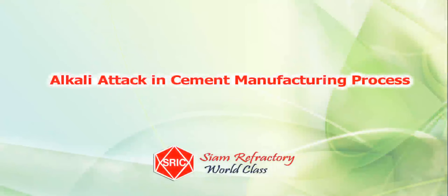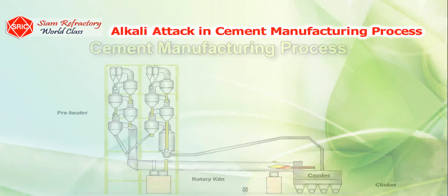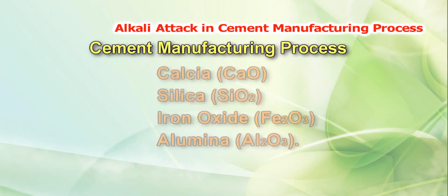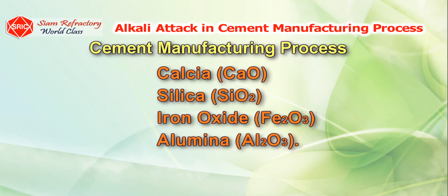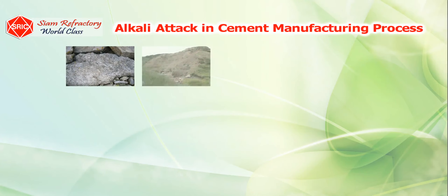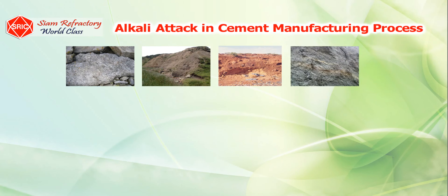In the alkali attack in a cement manufacturing process, the fundamentally important compounds required for the desired chemical reactions are calcium, silica, iron oxide, and alumina. Examples of raw materials containing these compounds are limestone, shale, laterite, clay, and so forth.